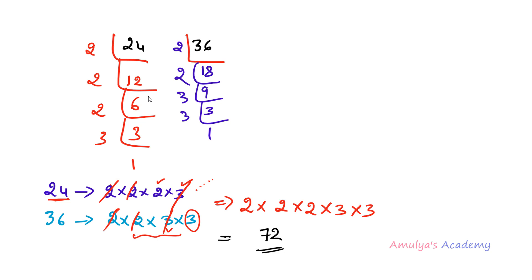So the steps are: first divide the number, then write down the prime factors of both numbers. If both numbers contain the same prime factor, consider it only once — take the prime factor only once. If you are getting confused with this step, you can divide these two numbers together and at that time you can ignore this step.